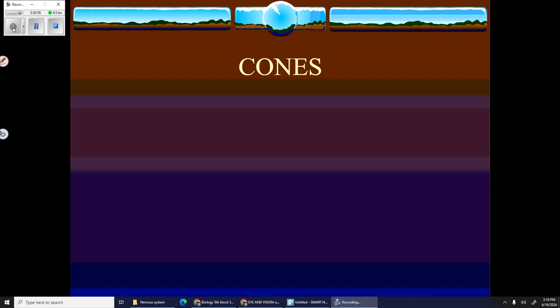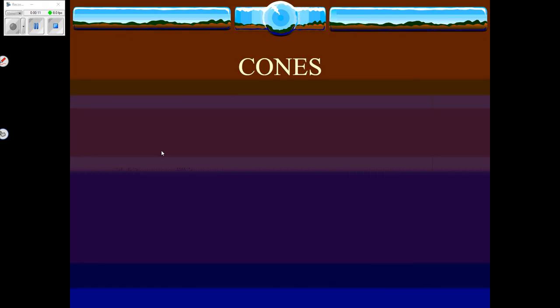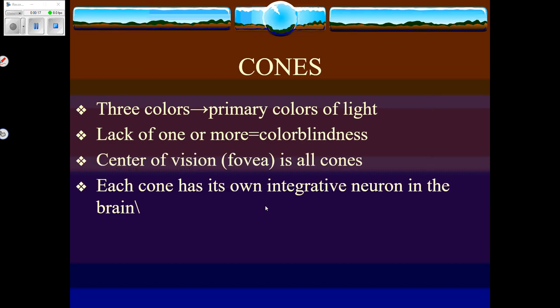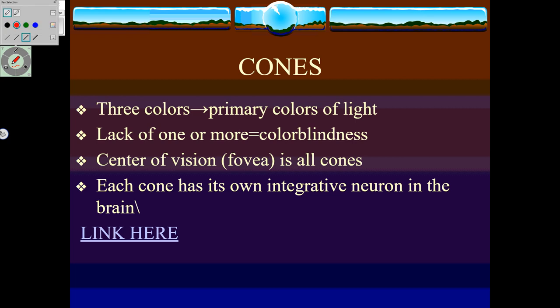We were talking about cones yesterday, and this is where we left it. Cones come in three colors through the primary colors of light. A reminder that the primary colors of light are very different than the primary colors of paint.